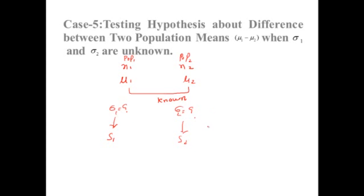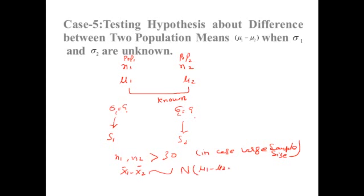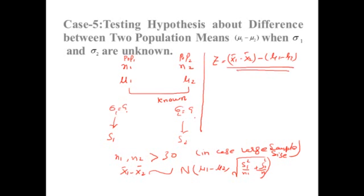This applies when we have large sample sizes, that is n1 and n2 greater than 30. In the case of large sample size, the sampling distribution of x-bar1 minus x-bar2 approaches a standard normal distribution with mean mu1 minus mu2 and standard deviation equal to the square root of (sigma1-squared over n1 plus sigma2-squared over n2).